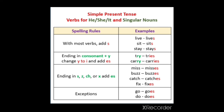Miss — misses. Buzz — buzzes. Catch — catches. Fix — fixes. Go — goes. Do — does. This is how we can prepare the s and es form of the verb. I have made one separate video on s and es forms of the verb. You can go and check it on my channel. Subscribe my channel so that you can easily find old and new videos whichever you want as per your topics.